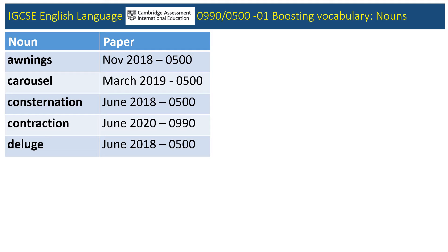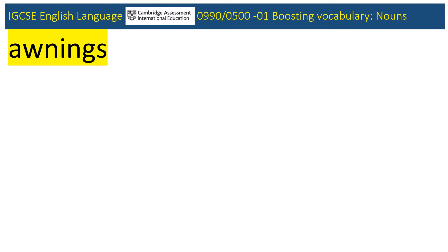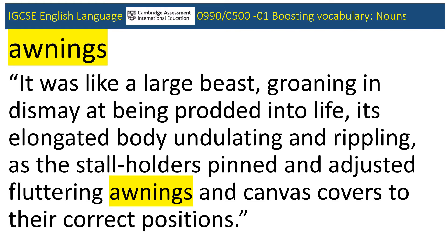So let's start with these five beauties. And with this word in particular — awnings — used in the November 2018 0500 paper, within a fairly long, complex sentence. The context is that Jane is looking at a market first thing in the morning. The storeholders are getting things ready, and adjusting fluttering awnings and canvas covers. From the context you can often get pretty close to identifying the meaning of words, although getting pretty close would not be sufficient for that grade nine. Why not have a go now at defining what awnings might mean?